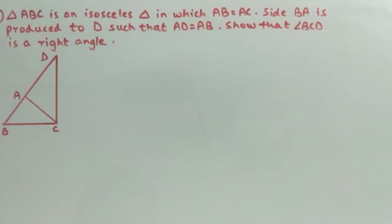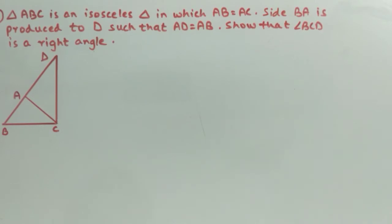The 6th question says: Triangle ABC is an isosceles triangle in which AB equals AC. Side BA is produced to D such that AD equals AB. Show that angle BCD is a right angle.